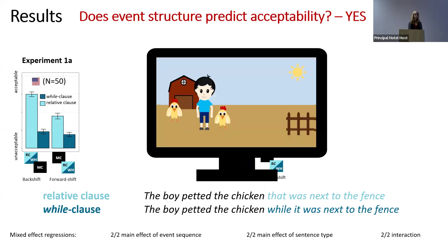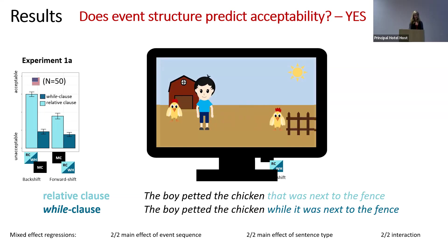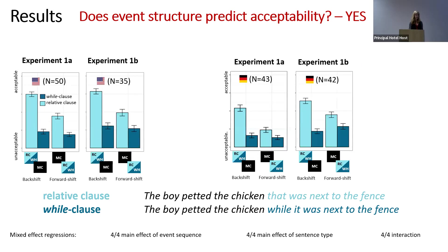You may have noticed that in our forward-shift videos, the chicken goes to the fence and stays there before participants read the sentence. One possibility for why forward shifts were less acceptable could be that participants did not perceive the state of the chicken being next to the fence as fully in the past — detecting a mismatch between the past tense in the relative clause and what they saw. To check this, we ran another version with videos where the state in the forward shift was unambiguously terminated: the boy petted the chicken, the chicken went to the fence, and then it flew away. We found a similar pattern, excluding this alternative explanation.